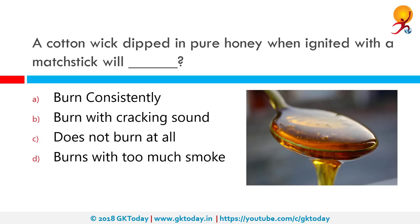A cotton wick dipped in pure honey, when ignited with a matchstick, will burn consistently. If adulterated, the presence of water will not allow the honey to burn and it produces a crackling sound.